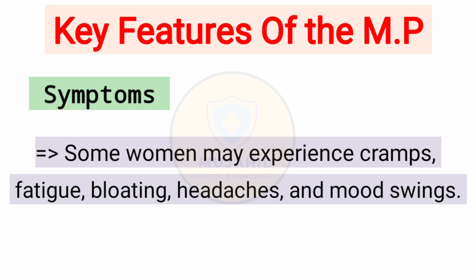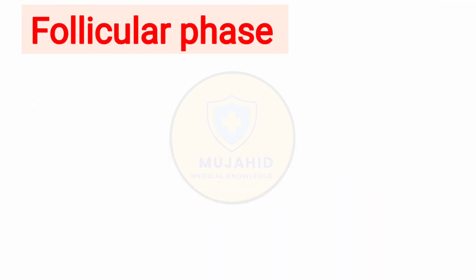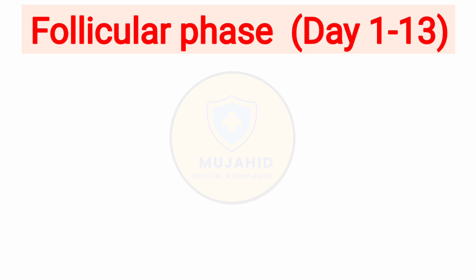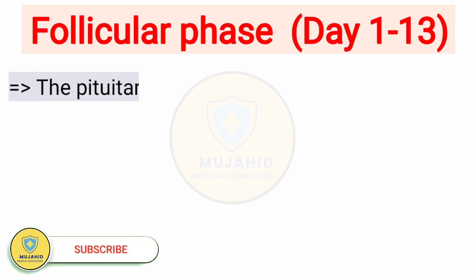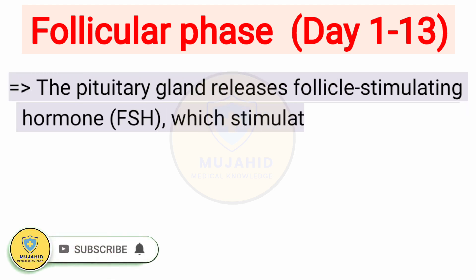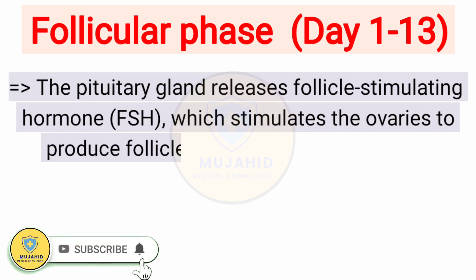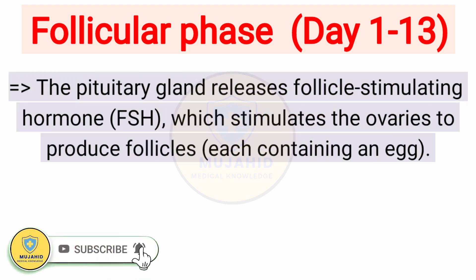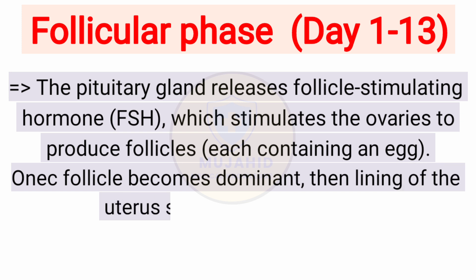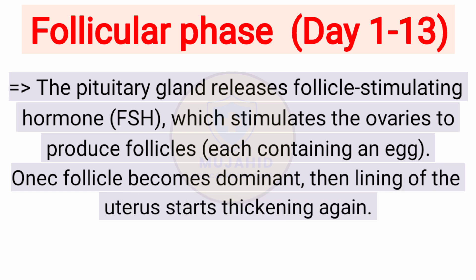Follicular phase, Day 2 to 13: during this phase the pituitary gland releases follicle-stimulating hormone (FSH), which stimulates the ovaries to produce follicles, each containing an egg. Once the follicle becomes dominant, the lining of the uterus starts thickening again.